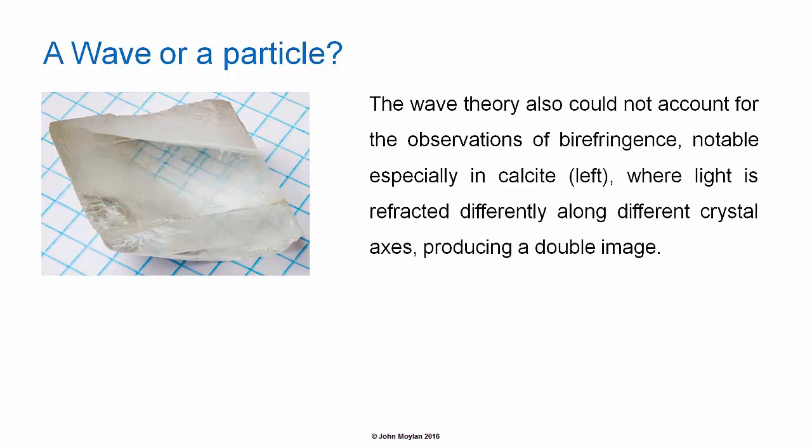The wave theory could also not account for the observation of birefringence, notable especially in calcite, where light is refracted differently along different crystal axes, producing a double image. And you can see in the picture that the image of the graph paper, as seen through the calcite ROM, is double. So the light is split into two separate images when it travels through materials such as calcite, and this is called birefringence.